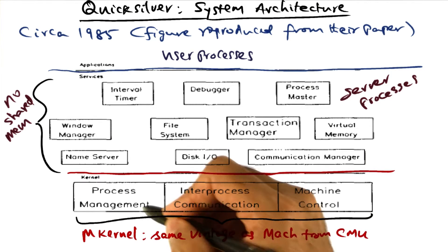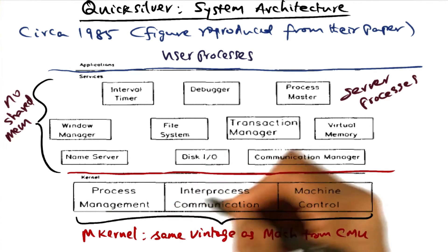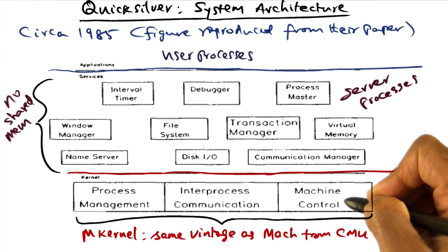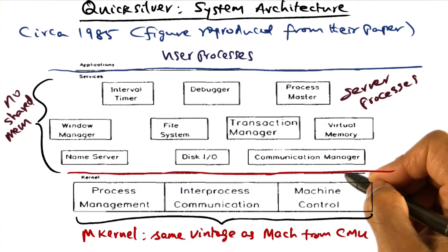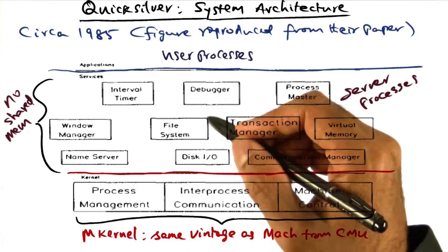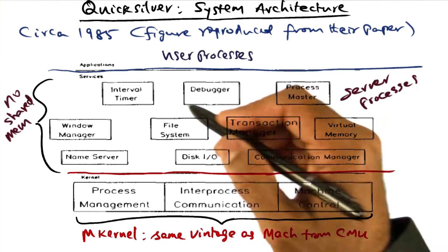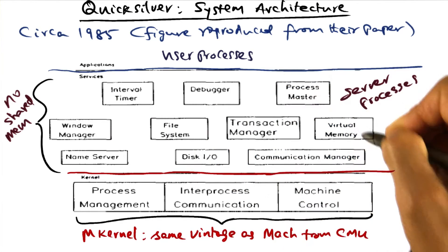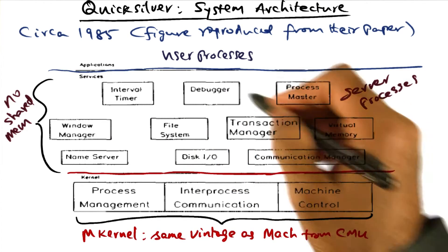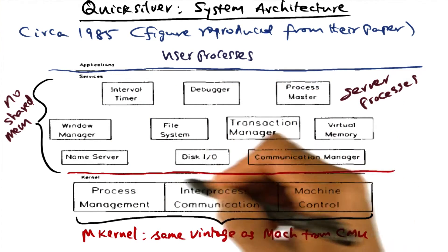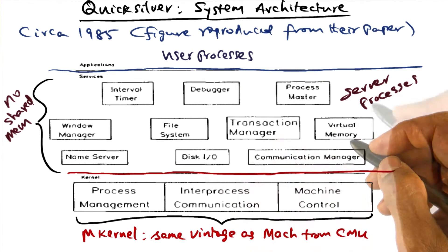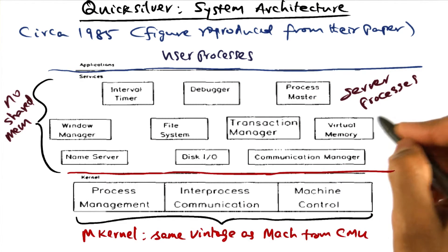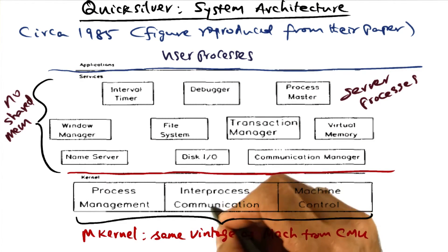All the system services are provided above the microkernel. The microkernel is only responsible for process management, IPC, and machine control. All of the system services such as window manager, file system, virtual memory, and communication all sit above the microkernel. The system services are implemented as server processes.